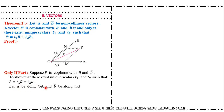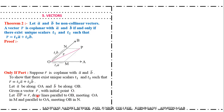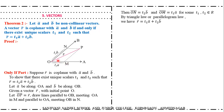Let A bar be along OA and B bar be along OB. Given vector R bar with co-initial point O, so O·P bar equals R bar. We draw a line parallel to OB and parallel to OA, which meets OB at N and OA at M. Then O·N bar equals T2 times B bar and O·M bar equals T1 times A bar as they are collinear vectors. Using the triangle or parallelogram law, R bar equals T1·A bar plus T2·B bar, as the diagonal is the resultant.